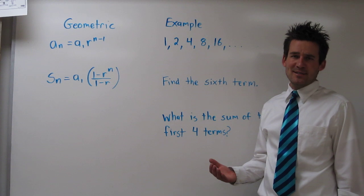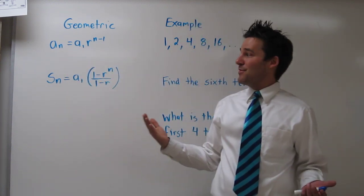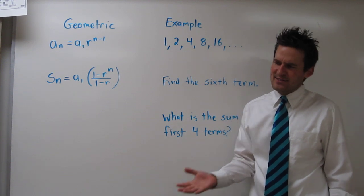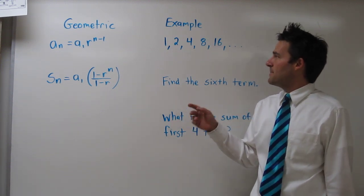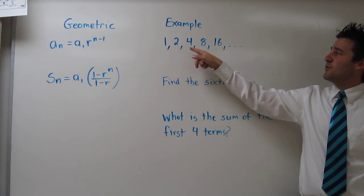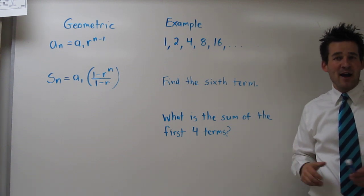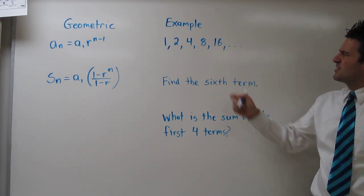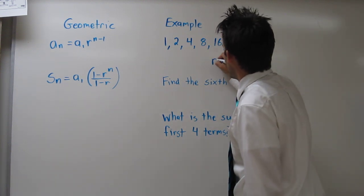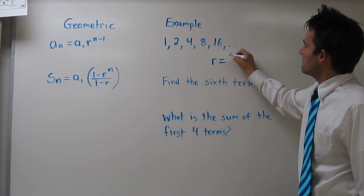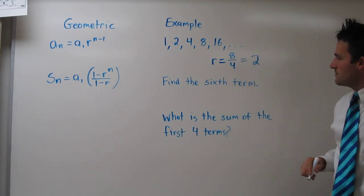With geometric sequences, we also have some formulas to calculate the nth term and to calculate the sum of a certain number of terms. So let's try that. Here we have a sequence 1, 2, 4, 8, 16. We should start off by finding the common ratio. So let's take the 8 and the previous term 4. Our common ratio equals 8 over 4, or 2.